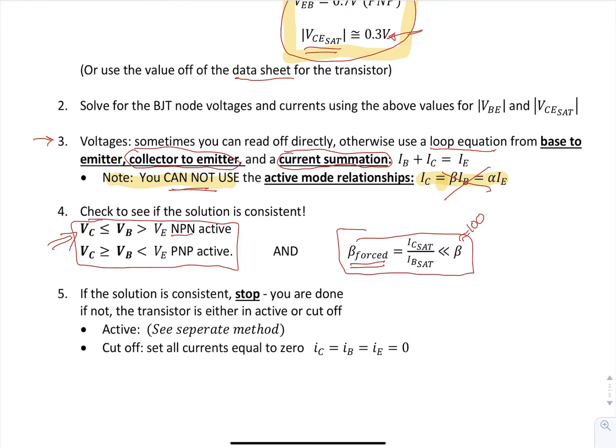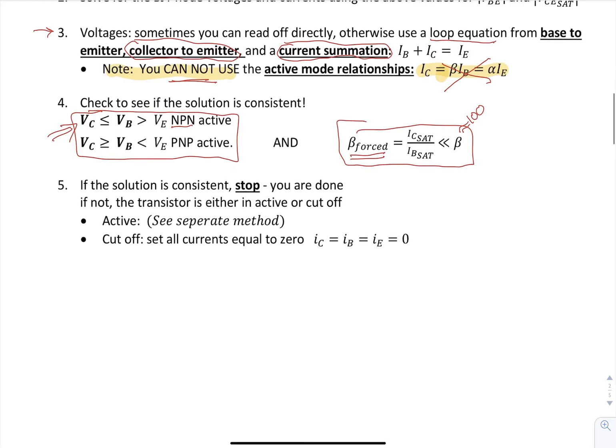So again, if the solution is consistent, you're done. If not, you're going to assume the different modes, active or cutoff. And then you're going to reanalyze the circuit with those steps and then check that solution.